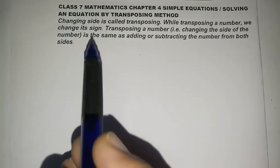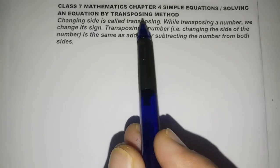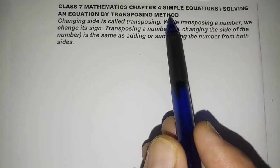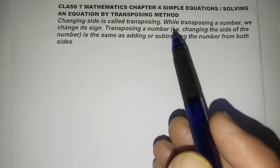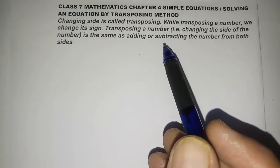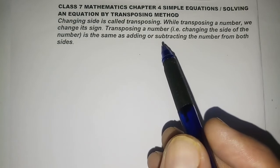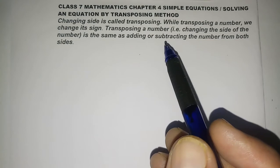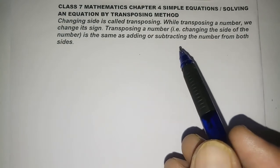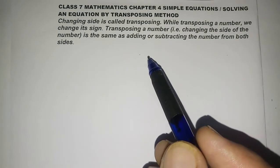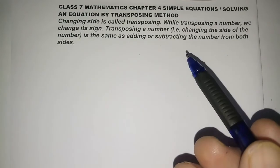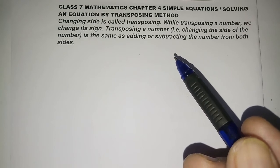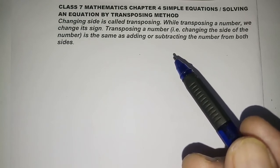Hello students, today we are going to learn solving equations by the transposing method. So far we have seen addition, subtraction, multiplication, and division — the step-by-step procedure we have followed: adding both sides, subtracting on both sides, multiplying on both sides, and dividing on both sides.